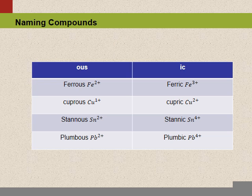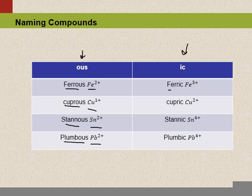Here are a few examples. The 'ous' versions include: iron is ferrous, copper is cuprous, tin is stannous, and lead is plumbous. On the other side, the 'ic' versions are: ferric, cupric, stannic, and plumbic. So there are four common ones here, though you might find a couple more.